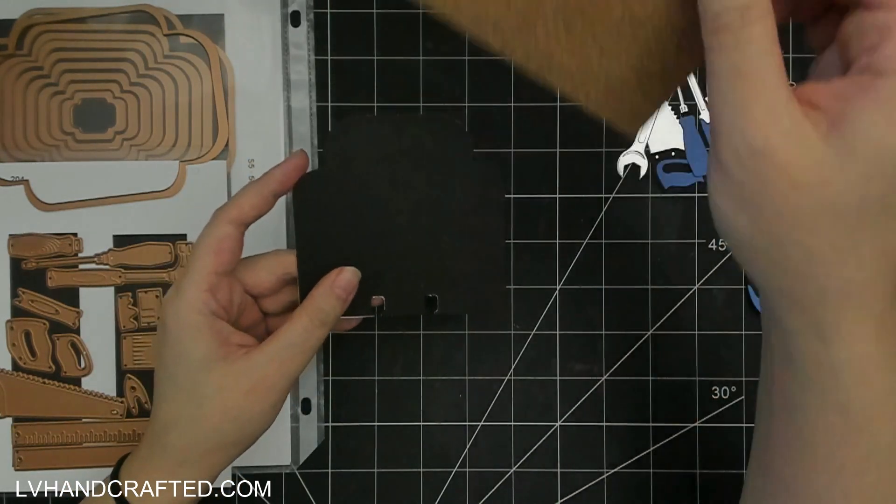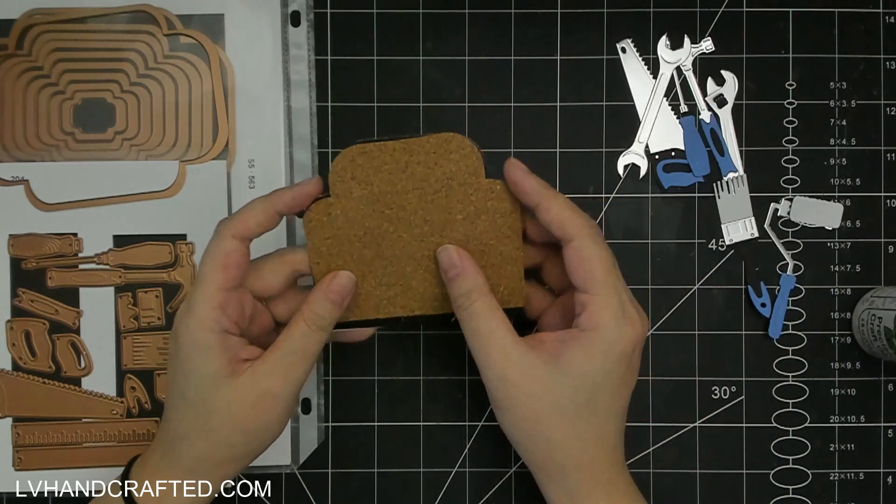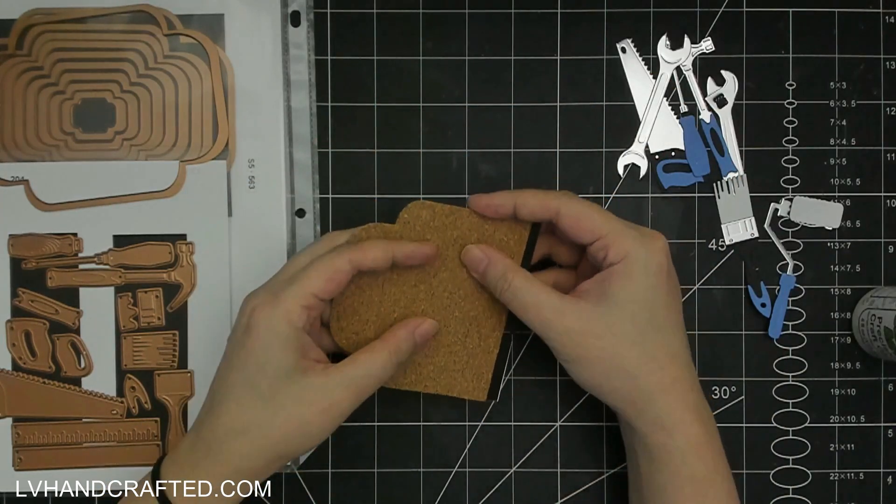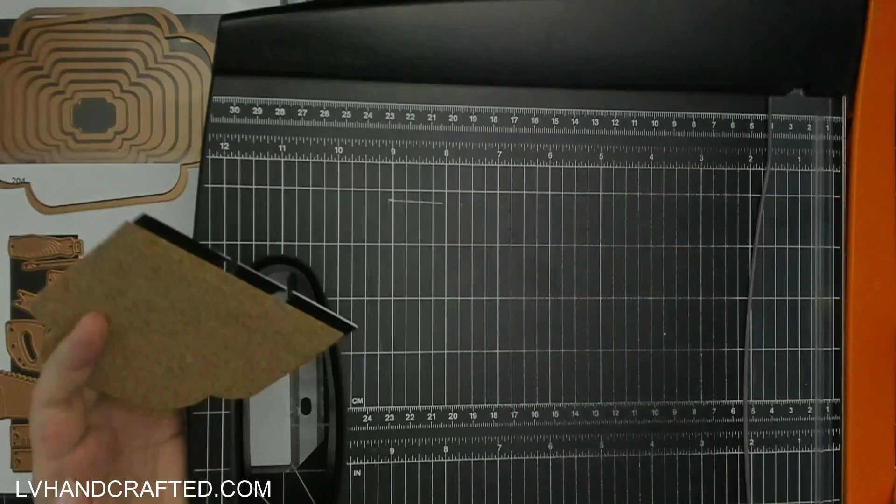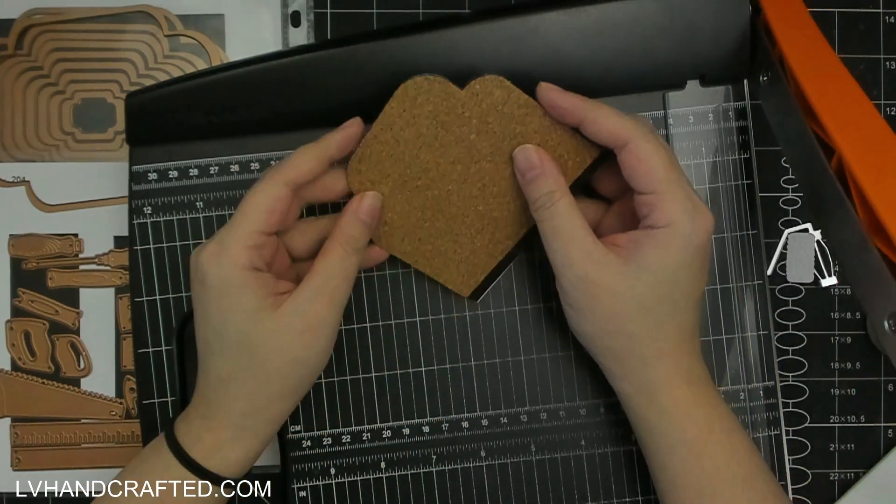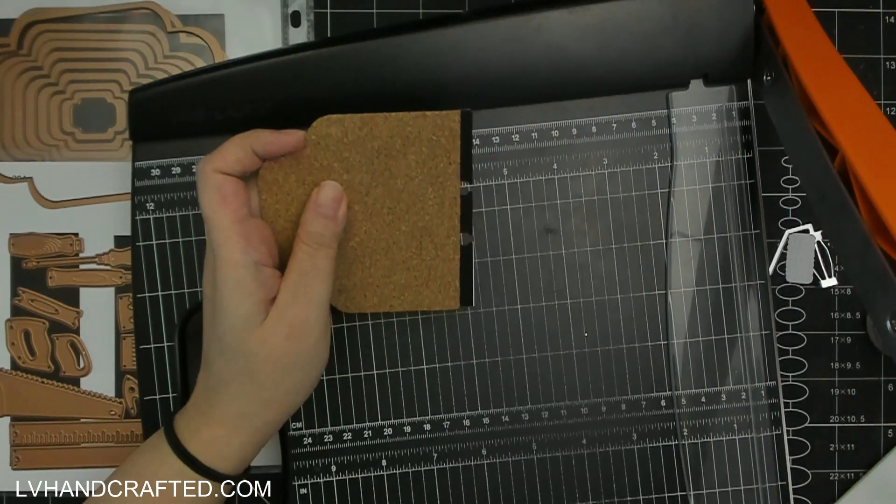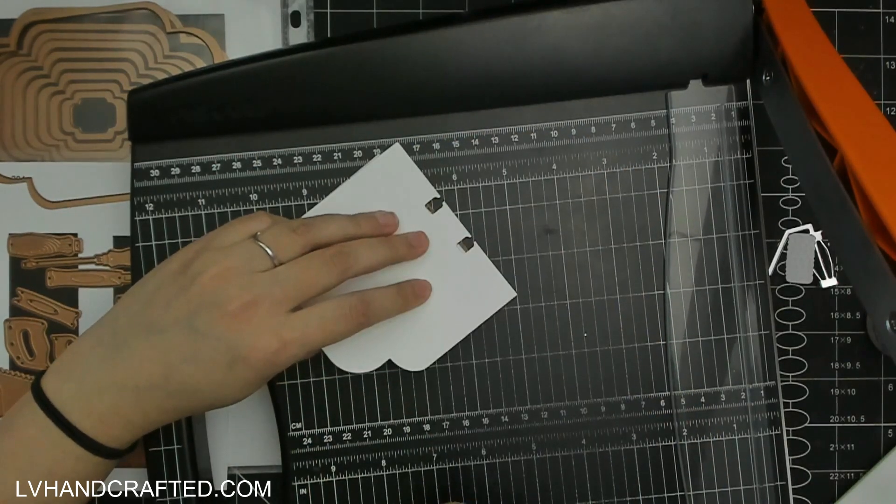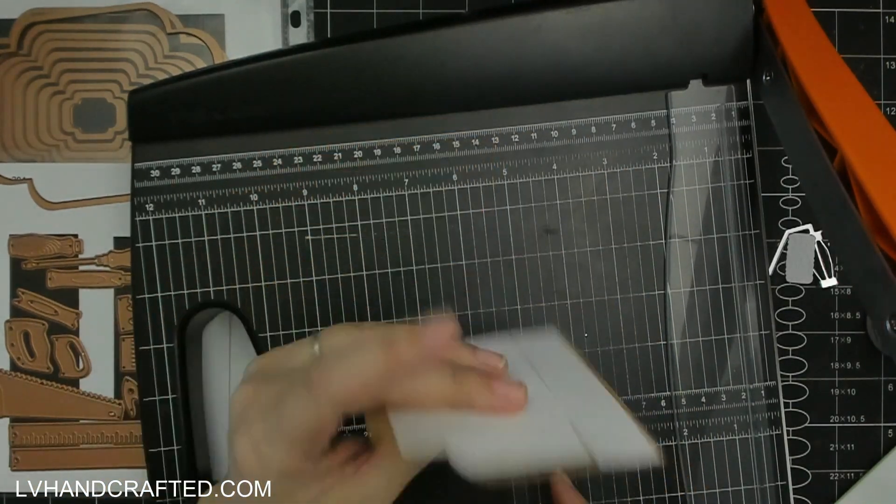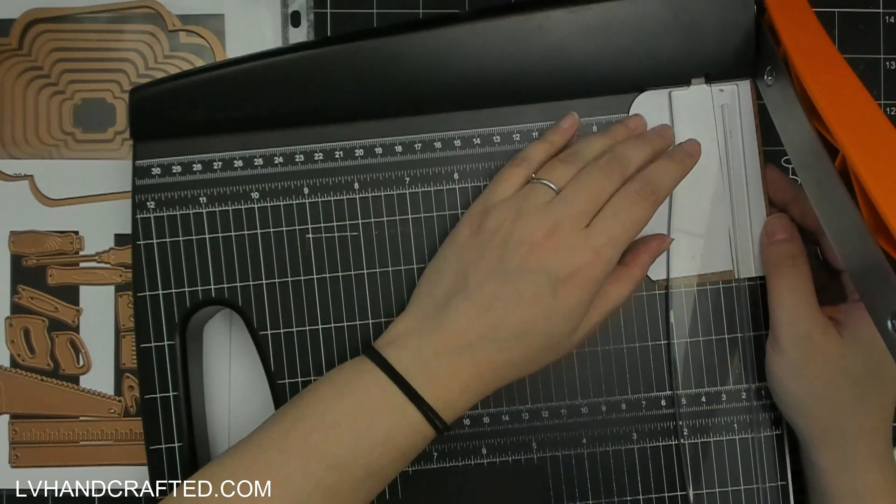So you can really use any shape die. You can use a hexagon die if you want. You could use a scalloped edge die if you want, a postage edge die if you want. So if you have the punch, it's really wonderful because you can really convert any shape die into a memory deck card.